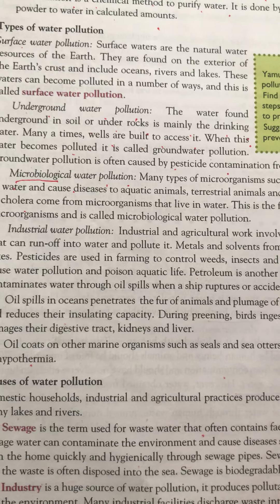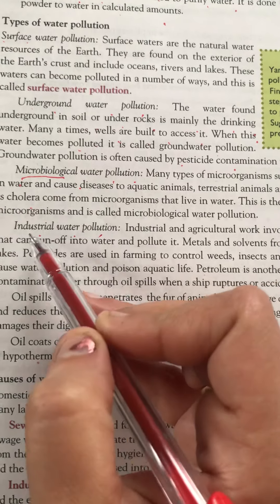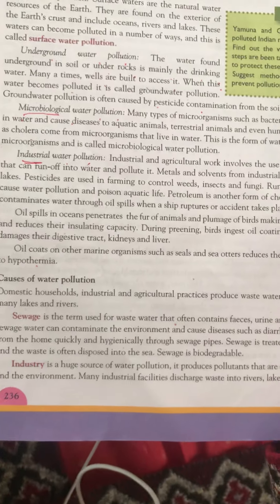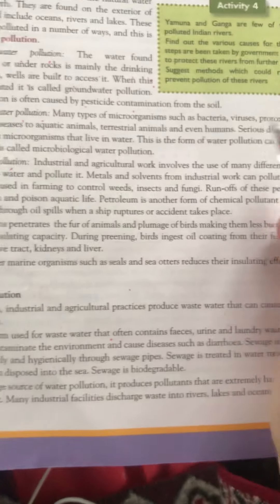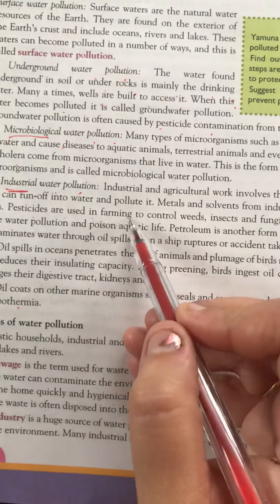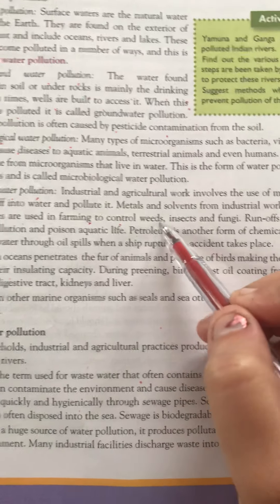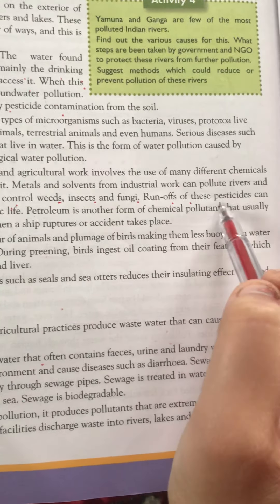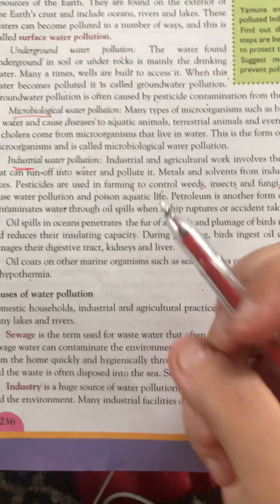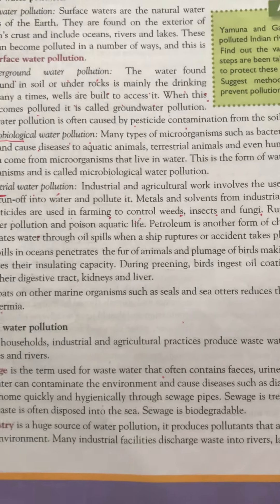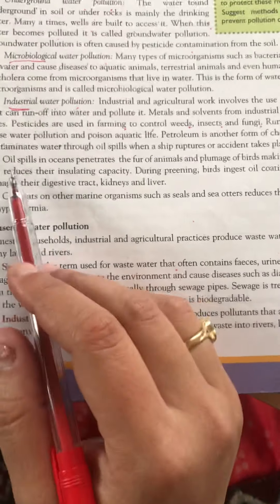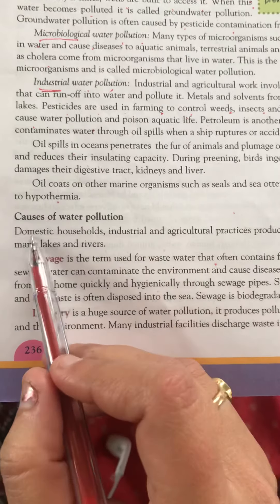The fourth type is industrial water pollution. Water is contaminated by industrial waste. Additionally, pesticides used in farming to control weeds, insects, and fungi can run off into drinking water and contaminate it. Water contaminated this way is not good for humans. Oil spills are also an example of water pollution.